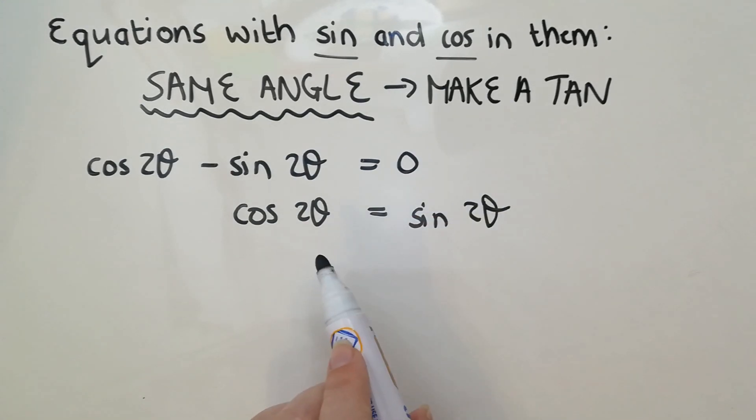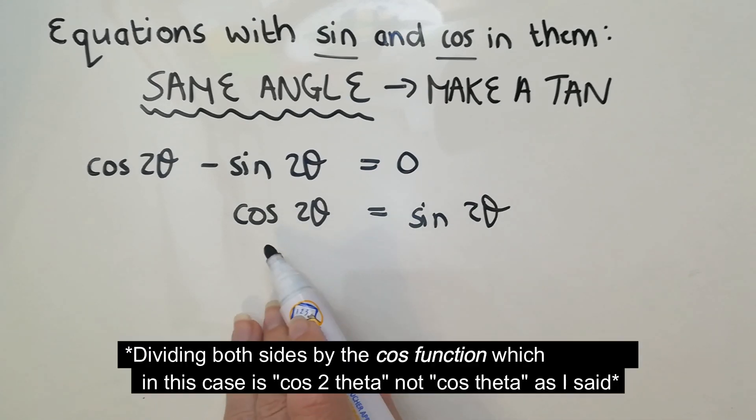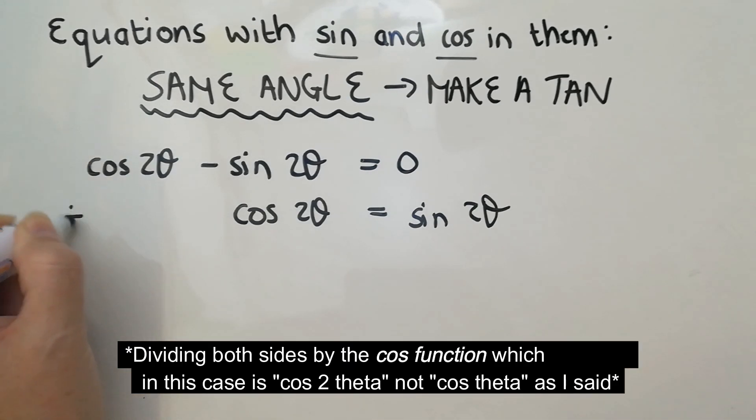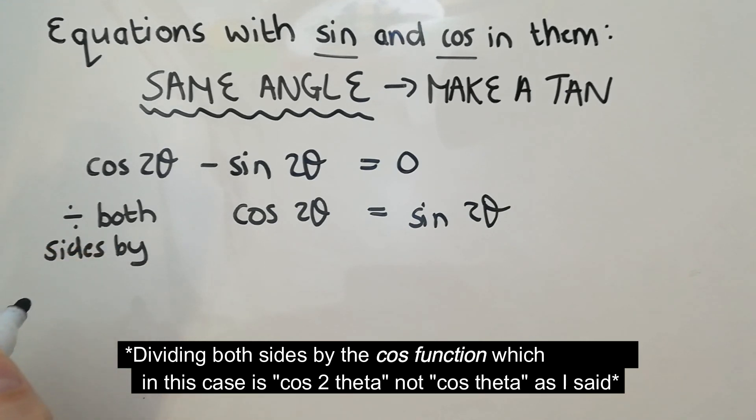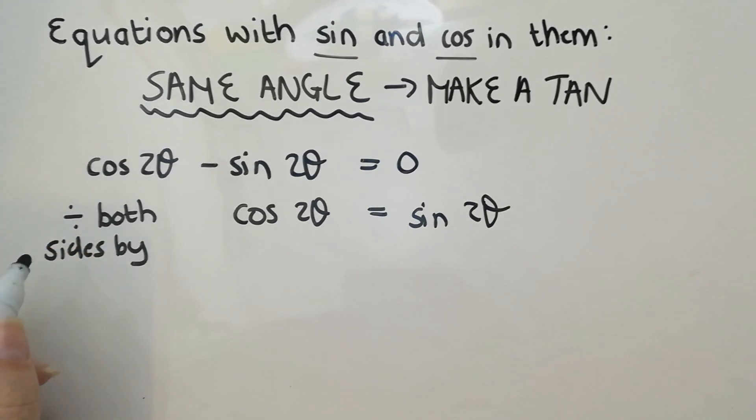Now we are going to make a tan by dividing both sides by the cos theta. So I'm just going to make a note here. We divide both sides, not by cos. You can't do that. Cos is always attached to its angle. So if you're going to divide, you have to divide by cos of 2θ.